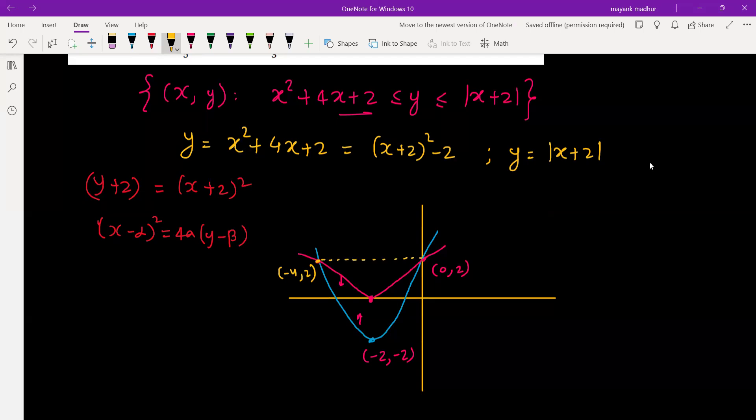We will get it by solving these two. When you solve (x + 2)² - 2 = |x + 2|, let |x + 2| = t. It will be t² - 2 = t, which gives you t² - t - 2 = 0. So |x + 2| = t = 2, and the x values are 0 and -4.